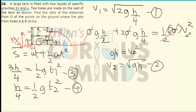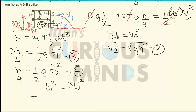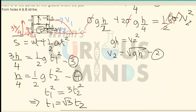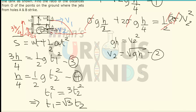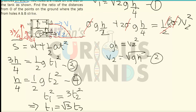Dividing equation 3 by equation 4, t1² = 3·t2², which implies t1 = √3 · t2. Now let us calculate the horizontal distances. In the horizontal direction there is no acceleration, so the horizontal distance x1 = V1·t1 and x2 = V2·t2.